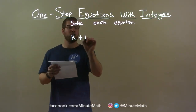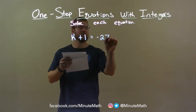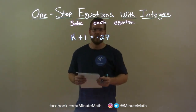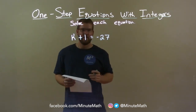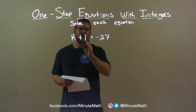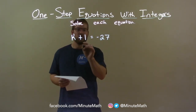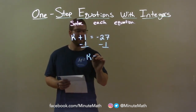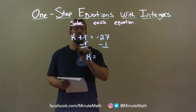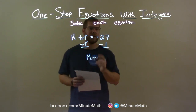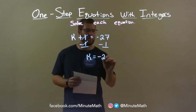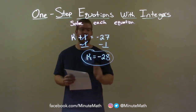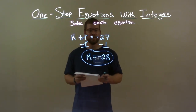k plus 1 equals negative 27. We have k plus 1 equals negative 27. I want to get k by itself. Opposite of addition is subtraction. So if I subtract 1 from both sides, I'm left with k by itself. The ones cancel. Negative 27 minus 1 is negative 28. So our final answer is k equals negative 28.